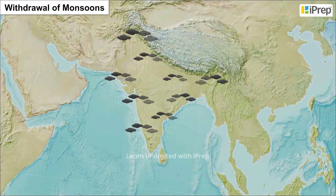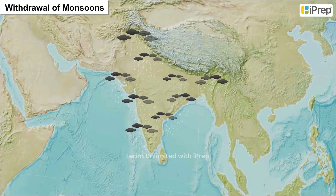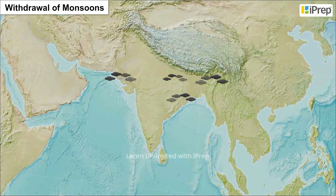Withdrawal of Monsoons. The withdrawal of monsoons begins in early September. By October, the monsoon completely withdraws from the northern half of the Indian Peninsula. The withdrawal is rapid in the southern peninsula.